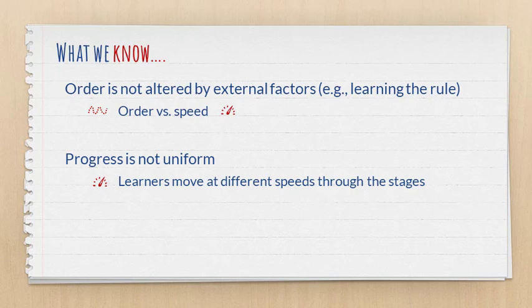What else do we know? We know that progress is not uniform. Learners move at different speeds through the stages, but the general path is the same. What might happen is that some learners move very quickly through one stage such that you don't even notice it — so it looks like they skipped stages, but scholars maintain that they still follow the same path; it's just that they moved very quickly through some stages.